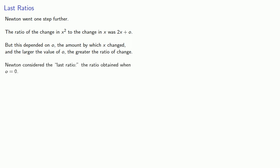And so Newton considered the last ratio, the ratio obtained when o is 0. You might view this as the change that doesn't depend on o. And if we let o equal 0, this is 2x.